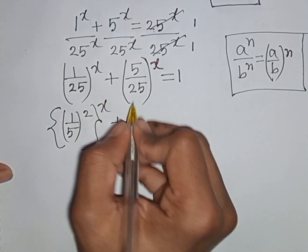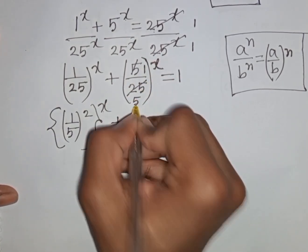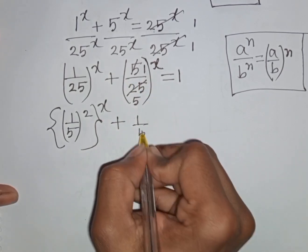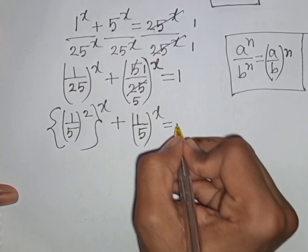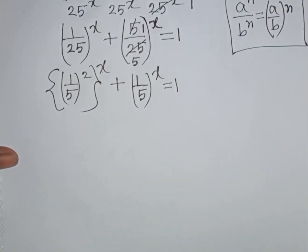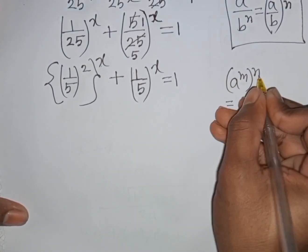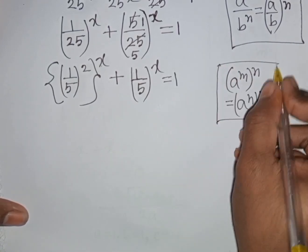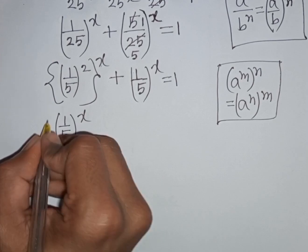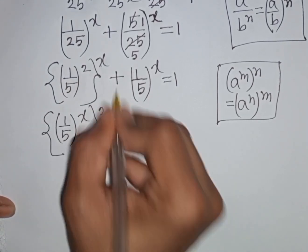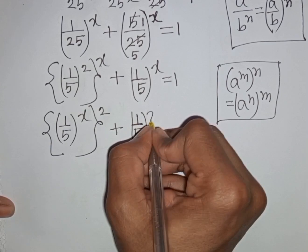Then 5 divided by 5 means it will be 1, and 25 divided by 5 means it will be 5. So we have (1/5) power x equal to 1. Now we can apply the rule a power m, power n is equal to a power n, power m. So I can write (1/5 power x) power 2 plus (1/5 power x) is equal to 1.